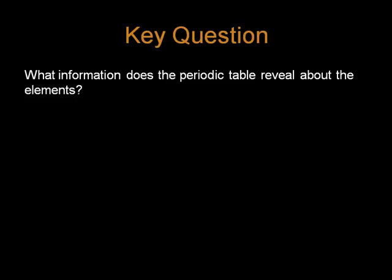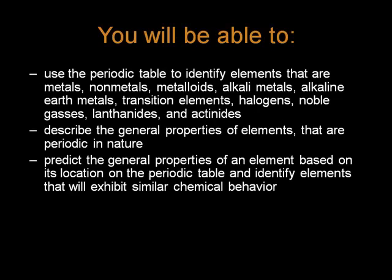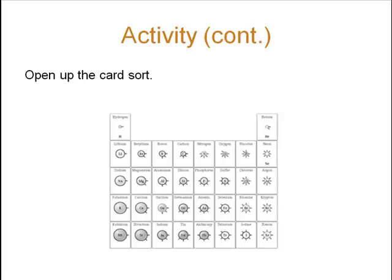The periodic table gives us a lot of information about the elements, and we're going to look at those things now. We can identify metals, non-metals, metalloids, alkali metals, alkaline earth metals, transition elements, halogens, noble gases, lanthanides, and actinides. We'll describe properties of elements and describe the general properties of an element based on its location in the periodic table, and identify elements with similar behavior based on their position in the table.